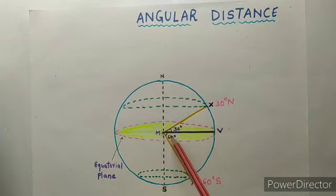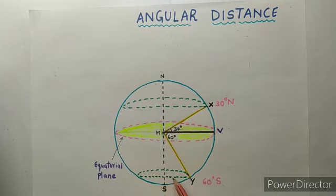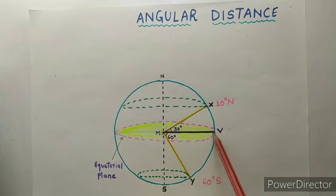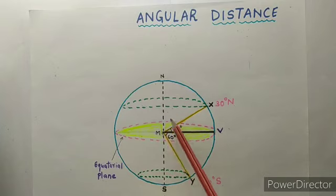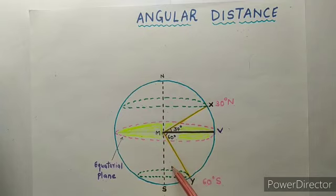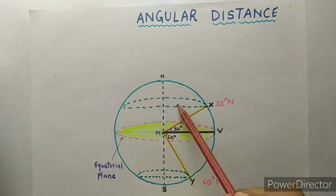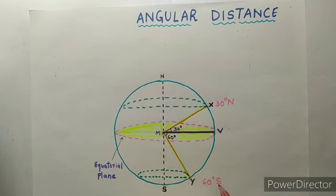Angle YMV is equal to 60 degrees. From point Y we are going to make another latitude using the green pen. This latitude is called 60 degree south, because the equator divides the earth into two equal parts — the northern hemisphere and the southern hemisphere. Below the equator is the southern hemisphere, so the 60 degree latitude is called 60 degree south.